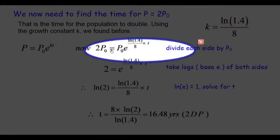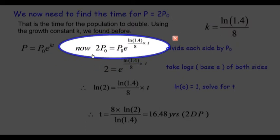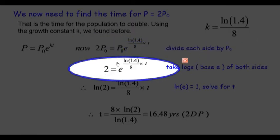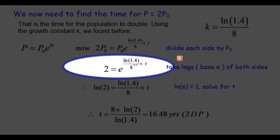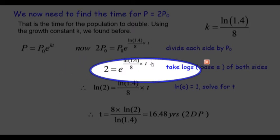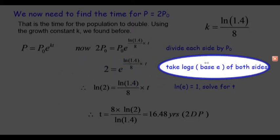The population is now 2P₀ equals P₀e^(kt), where k is what we found earlier. We divide everything by P₀, we get 2 equals e to this particular power. We need to bring this down to solve for t, so we take the natural log of both sides, base e.